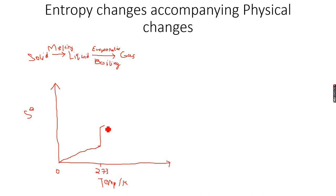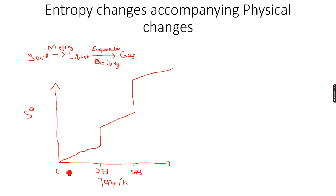Then entropy will continue to increase. And as entropy continues to increase, it will form a gas. Now as it has formed a gas over here at 373 Kelvin, because the boiling point of water is 373 Kelvin which is 100 degree Celsius. So again there will be a change of state, so I will have a vertical line over here. And again, as all the liquid turns into gas, then there will be only increase in entropy because the gas molecules will start gaining energy.